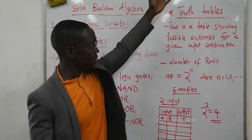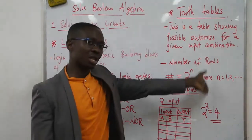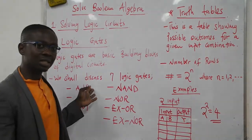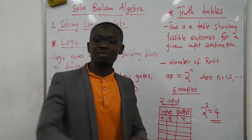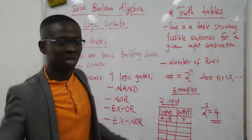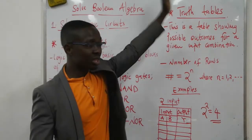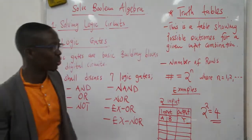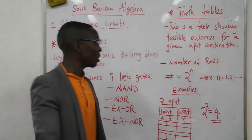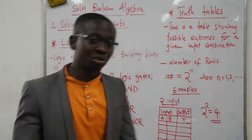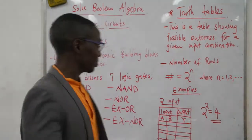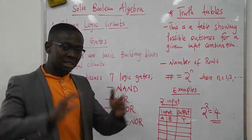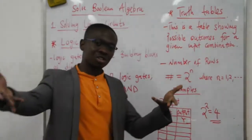Then we will go further to discuss truth tables. When doing the AND gate, we will discuss the AND gate itself and the truth table. So what is a truth table? A truth table is simply a table showing possible outcomes for a given input combination — it shows the inputs and the outputs.